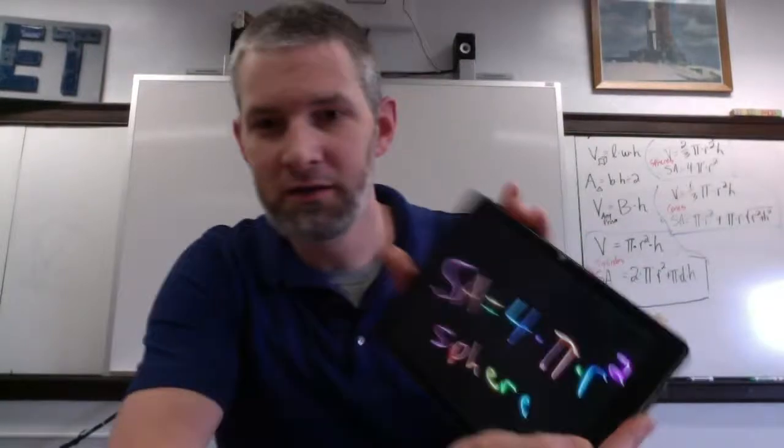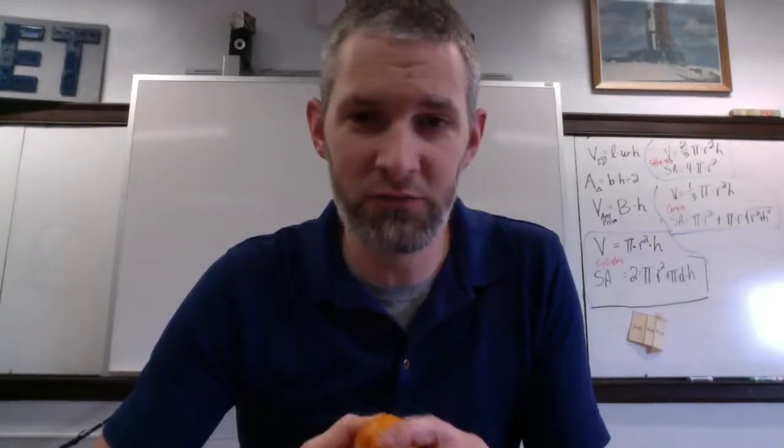So the reason that worked is because it's 4 times pi times radius squared. And my guess is from now on, whenever your kids peel something round like that, they'll think of that formula.